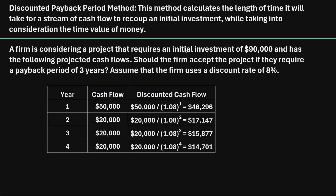Let's check out an example of how to use this method. A firm is considering a project that requires an initial investment of $90,000 and has the following projected cash flows. Should the firm accept the project if they require a payback period of three years? Assume that the firm uses a discount rate of 8%.